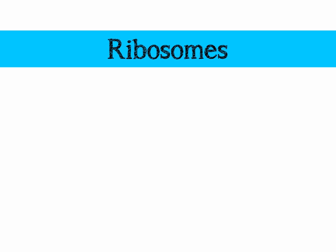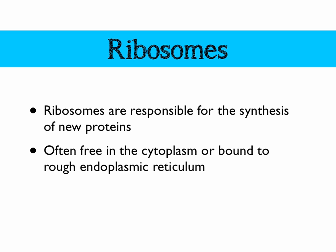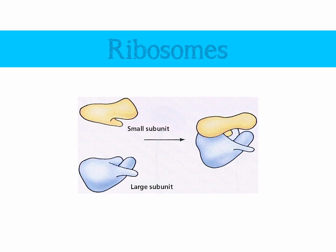We'll look at the ribosomes, which are responsible for building new proteins — they do protein synthesis. They can be found either free in the cytoplasm or bound to the rough endoplasmic reticulum. They're made up of two subunits manufactured by the nucleolus. We've got a small subunit on top and a large subunit below. They come together and proteins get built up and printed through the middle — a bit like one of those label makers where you get a long string coming out of one side, but for proteins, making up polypeptides from amino acids.